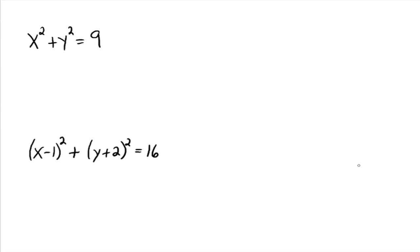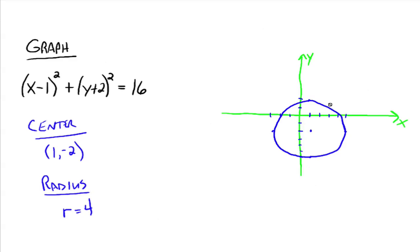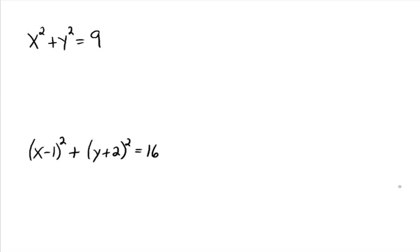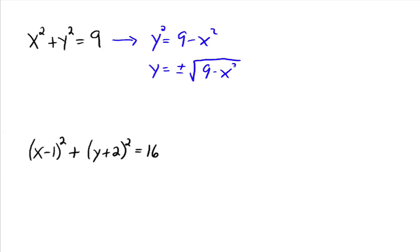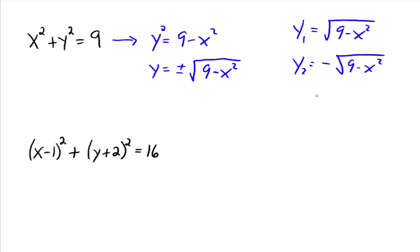Your calculator will also graph circles, but keep in mind that circles are not functions — they don't pass the vertical line test; one x value gives you two different y values. So your calculator can't graph them as-is because it only graphs functions. What we have to do is isolate y. So y squared equals 9 minus x squared, meaning y equals plus or minus the square root of (9 minus x squared). There are two functions here: y1 equals the square root of (9 minus x squared), which is the top half of your circle, and y2 equals negative the square root of (9 minus x squared), which is the bottom half.